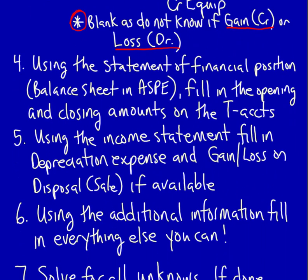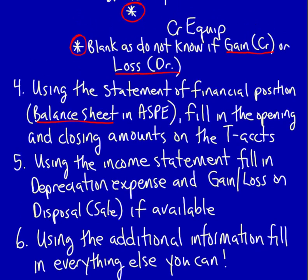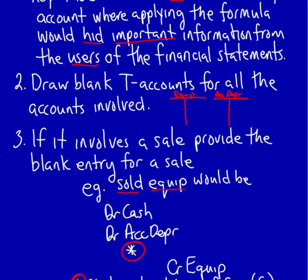Step four: using the statement of financial position — also called the balance sheet under ASPE — fill in the opening and closing amounts on the T-accounts. For example, if equipment had an opening balance of 70,000 from the previous balance sheet and a closing balance of 82,000 at year end, fill those in. If accumulated depreciation had an opening balance of 28,000 and a closing balance of 20,000, fill that in too. Fill in all the information you can.